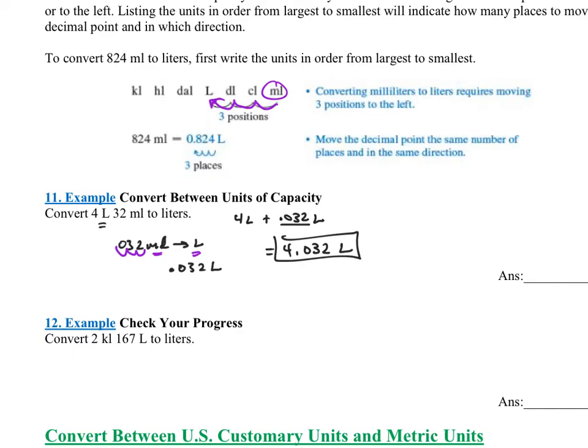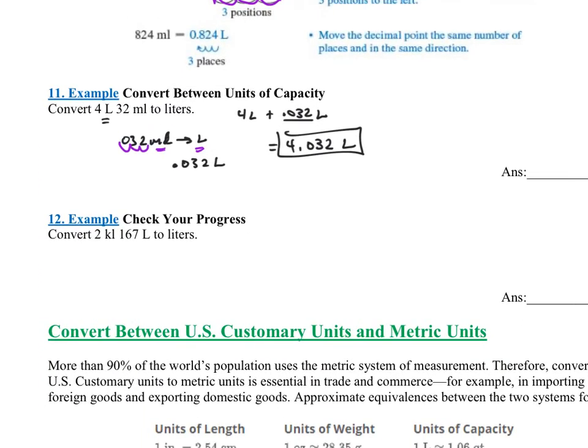This one says convert 2 kiloliters 167 liters to liters. So we already have liters. So the question is blank kiloliters is how many liters plus the 167 liters we already have, right? Okay. So the question is what is 2 kiloliters in terms of liters?